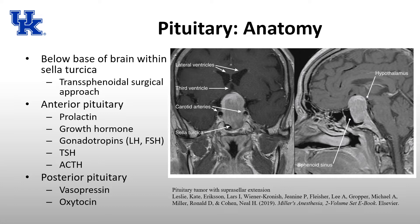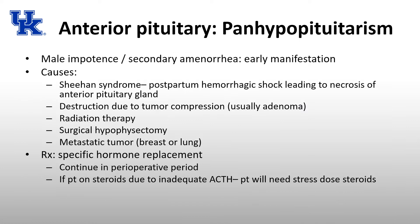The pituitary is divided into the anterior and the posterior pituitary. The anterior pituitary secretes quite a few more hormones than the posterior pituitary. The anterior pituitary is going to secrete prolactin, growth hormone, gonadotropins — which are luteinizing hormone and follicle-stimulating hormone — as well as TSH and ACTH. The posterior pituitary is going to secrete vasopressin and oxytocin, and that is it.